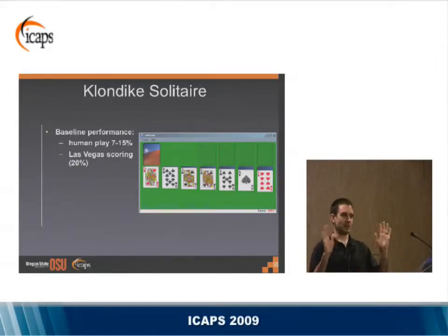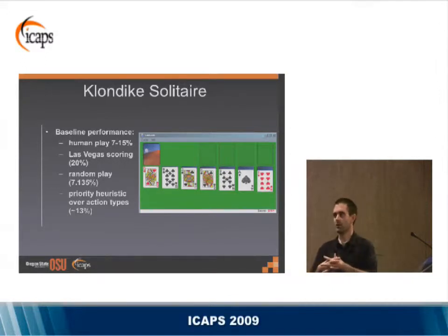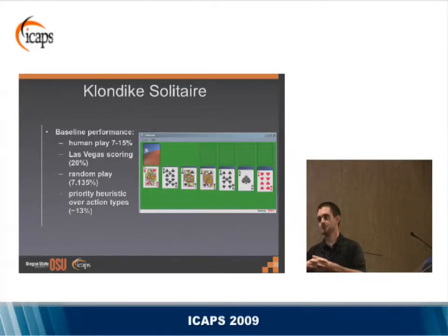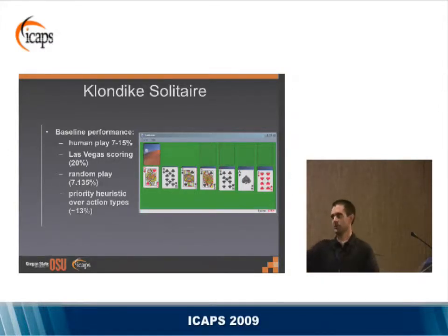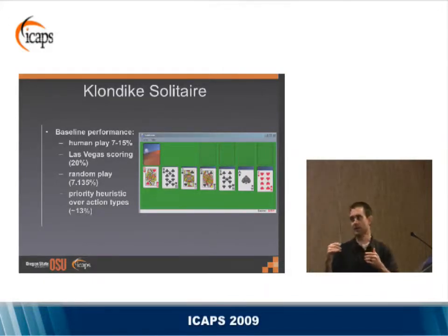All indications are that Solitaire isn't played in Vegas anymore, but this was our guessed upper bound. We implemented random play and won about 7% of games. Then we classified all our different actions — for example, moving a card up to the foundation is better than moving a card around the table — and prioritized them accordingly. Following these priorities, you can win about 13% of games, which gels well with our human estimates and is significantly below the Las Vegas 20% threshold.